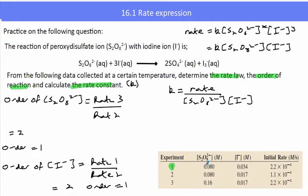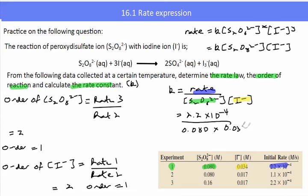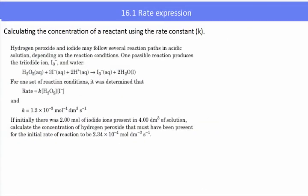To work out the rate constant, we first determine its units: rate divided by two concentrations — mole per decimetre cubed per second over mole per decimetre cubed squared — which simplifies to mol⁻¹ dm³ s⁻¹. Then we substitute values from experiment 1 into the rate expression to determine the rate constant value, which gives k equals 0.081 mol⁻¹ dm³ s⁻¹. You could use any of the other experiments and get the same result.